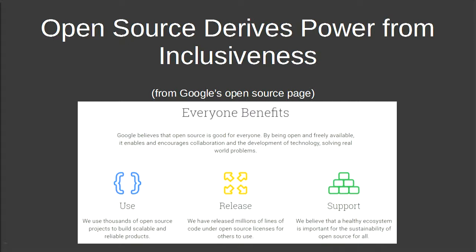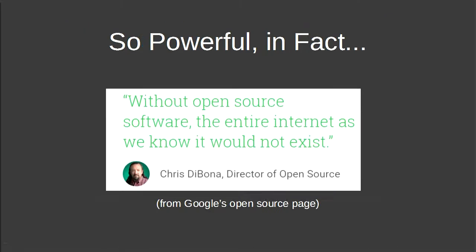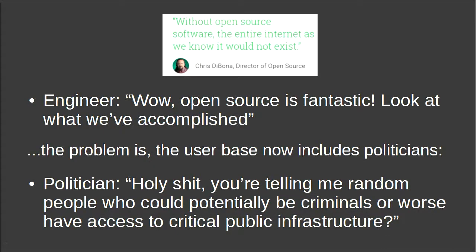It turns out that open source drives its power from inclusiveness — the fact that we can share source, everyone can get involved, and we can share ideas openly and freely makes open source more powerful. This is a snippet from Google's open source page. It's so powerful that we can make statements like: without open source software, the entire internet as we know it would not exist.